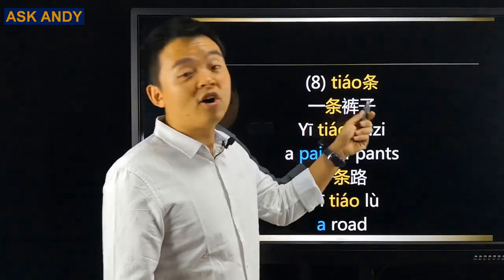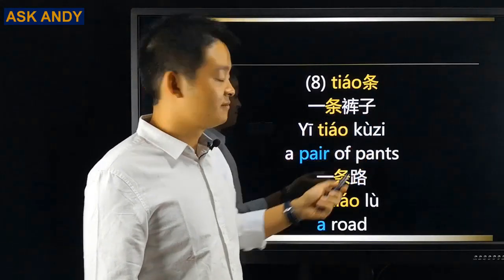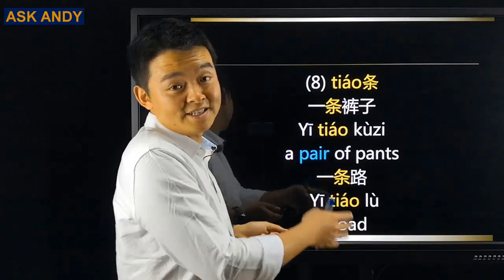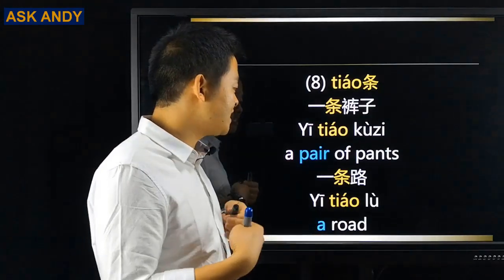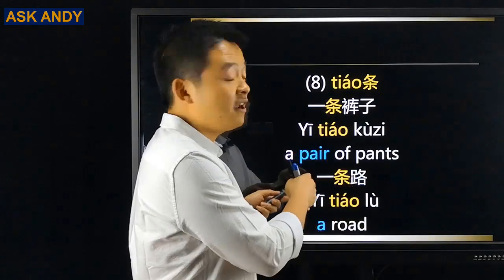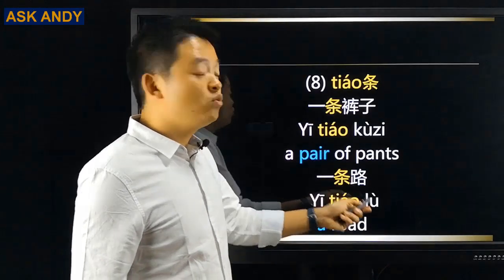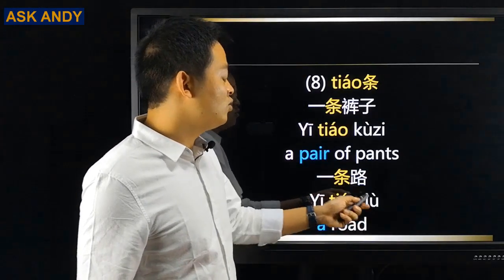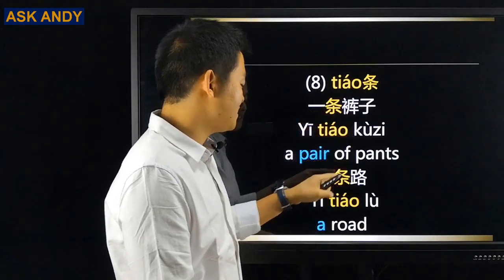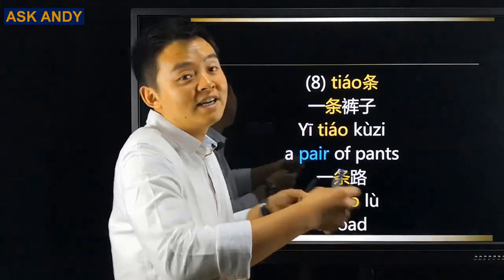Number eight: 条. For example, 一条裤子 — a pair of pants. Remember this is different from English where we say 'a pair of pants.' Also 一条路 — a road. The common point between pants and a road: 条 is for something long and thin.